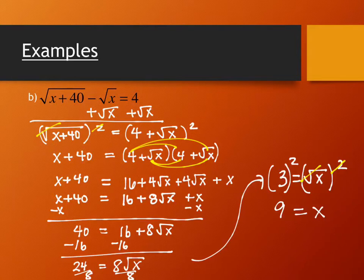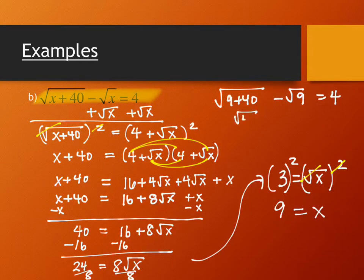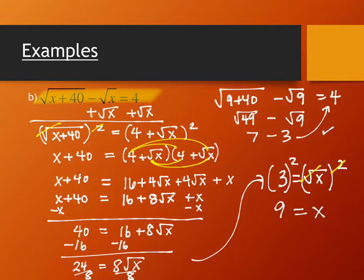Since we squared twice in this problem, we absolutely need to check. Plugging x equals 9 into the original: square root of 9 plus 40 minus square root of 9 should equal 4. That's square root of 49 minus square root of 9, which is 7 minus 3, which equals 4. It checks out — x equals 9 is a valid solution with no extraneous solutions. Forgetting to check only matters when a solution doesn't work; if it does work, no one will know. But you don't know ahead of time, so always check.